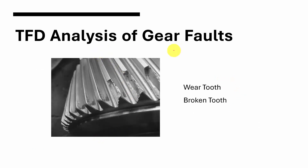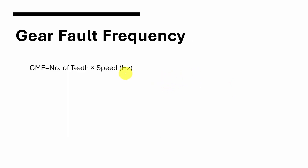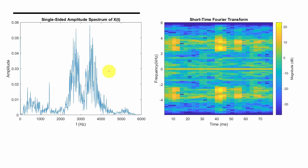The second component is gear fault. In gears, the most common types of fault are worn tooth and broken tooth — there may be a small amount of wear in a tooth or a part of a tooth will be broken. The gear fault frequency can be calculated using the equation: number of teeth multiplied by speed in hertz. If you are going to identify the fault of a whole component, you have to calculate the gear mesh frequencies of all gears and the bearing fault frequencies of all bearings.